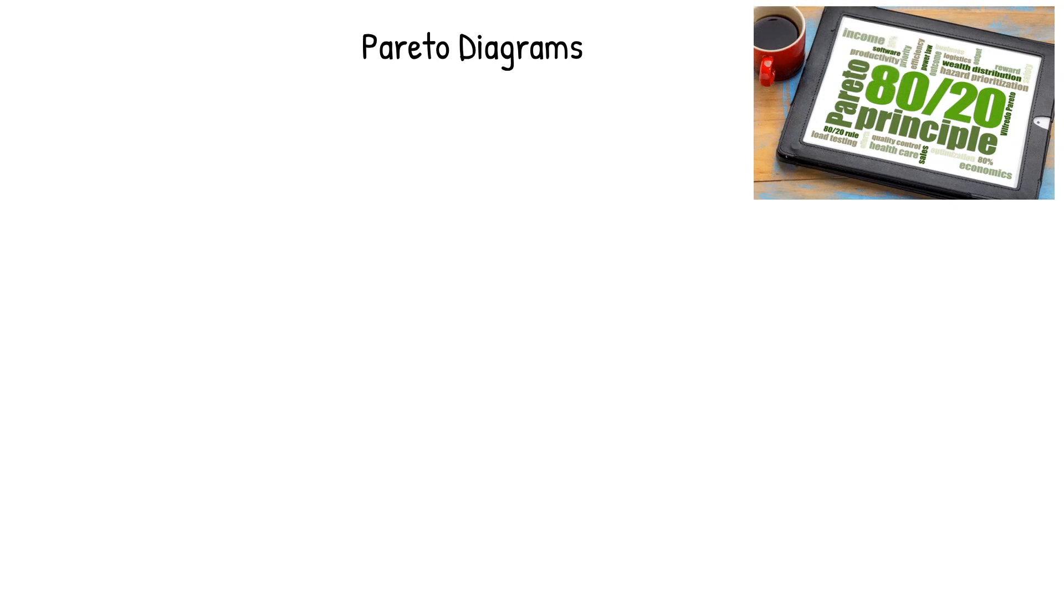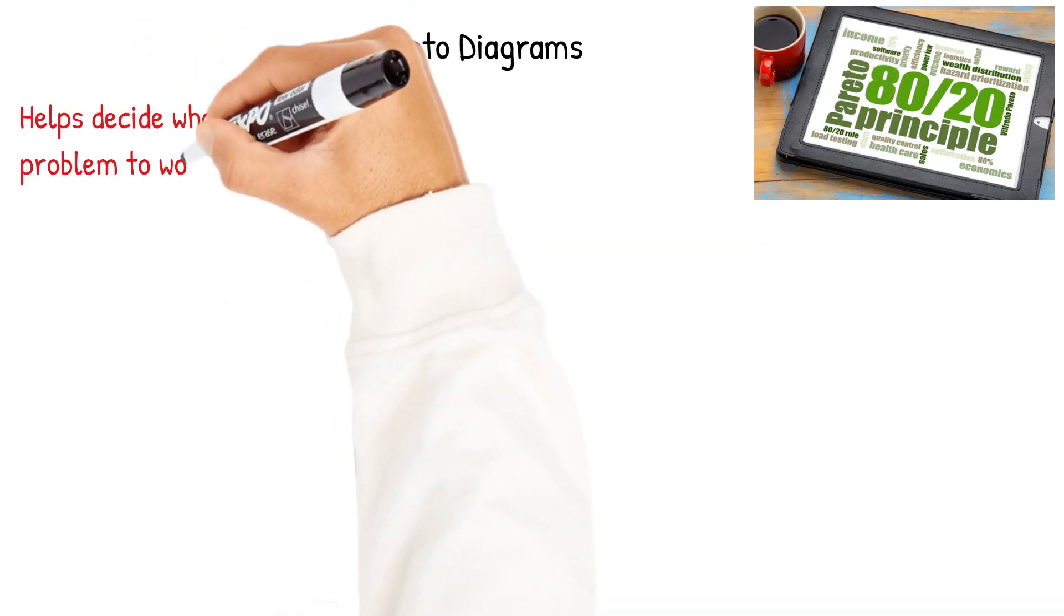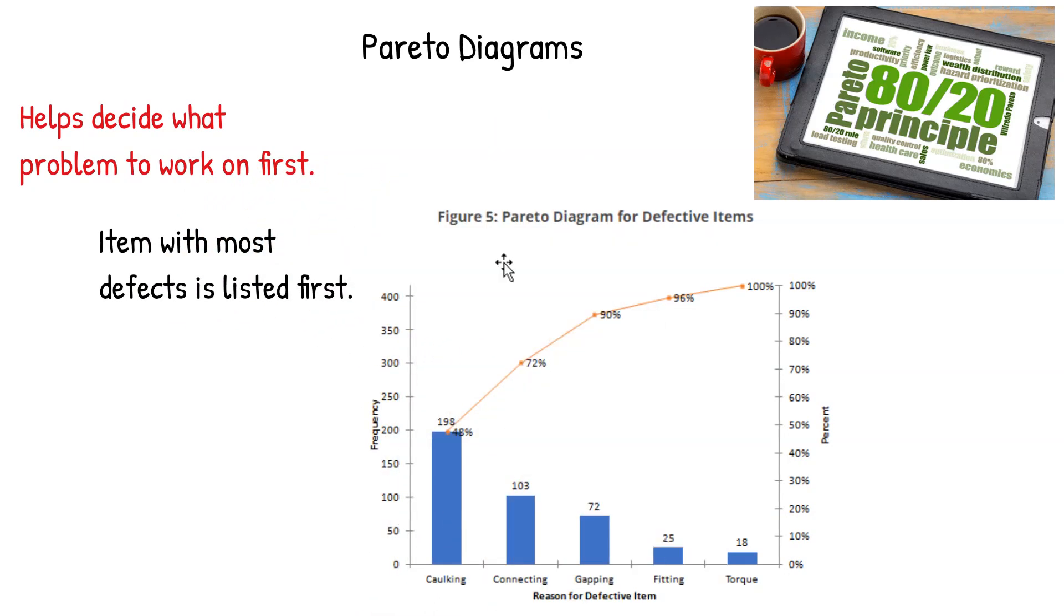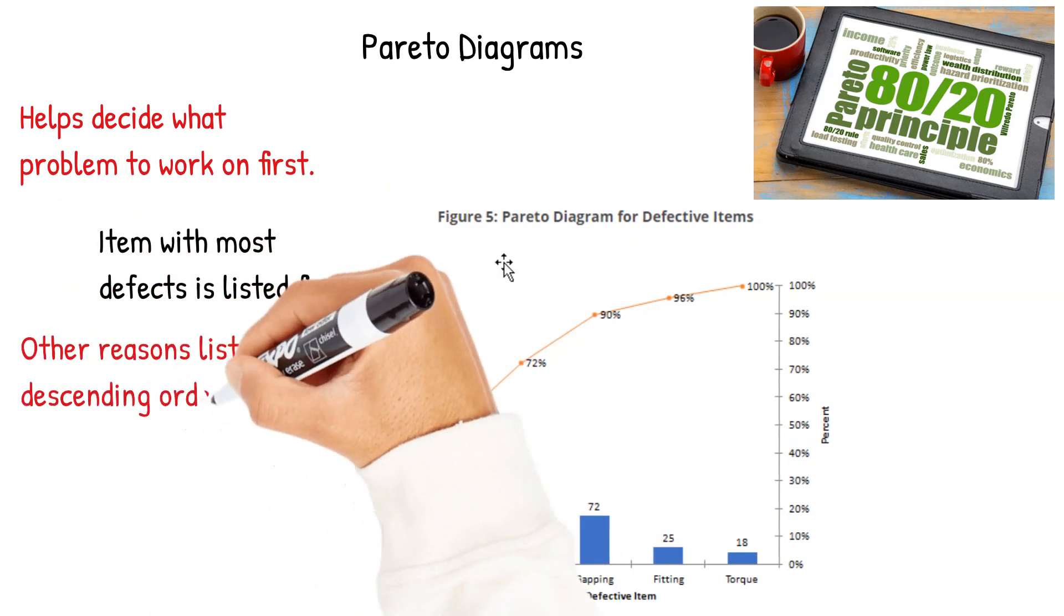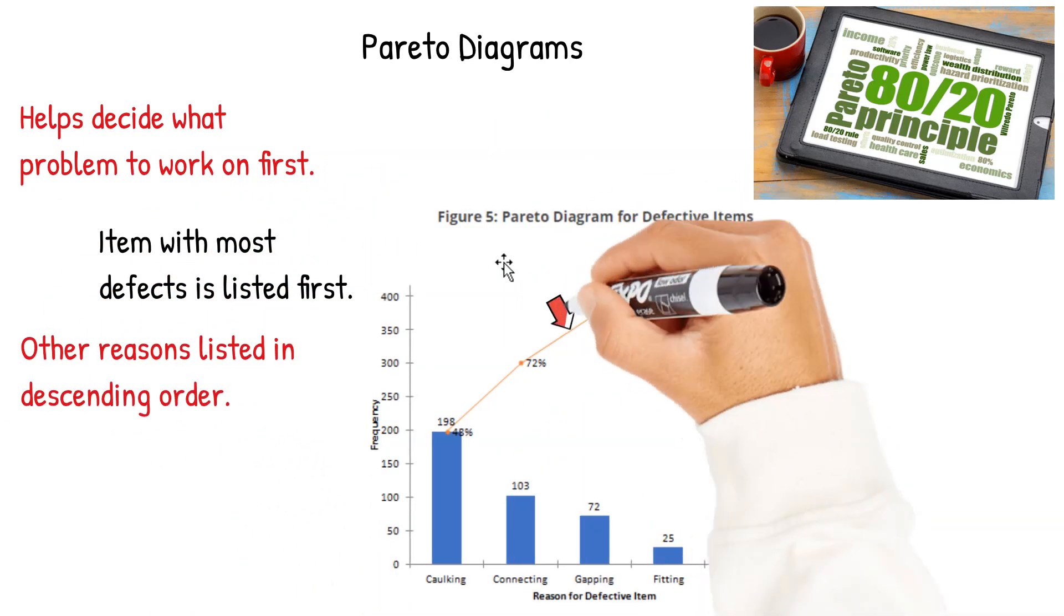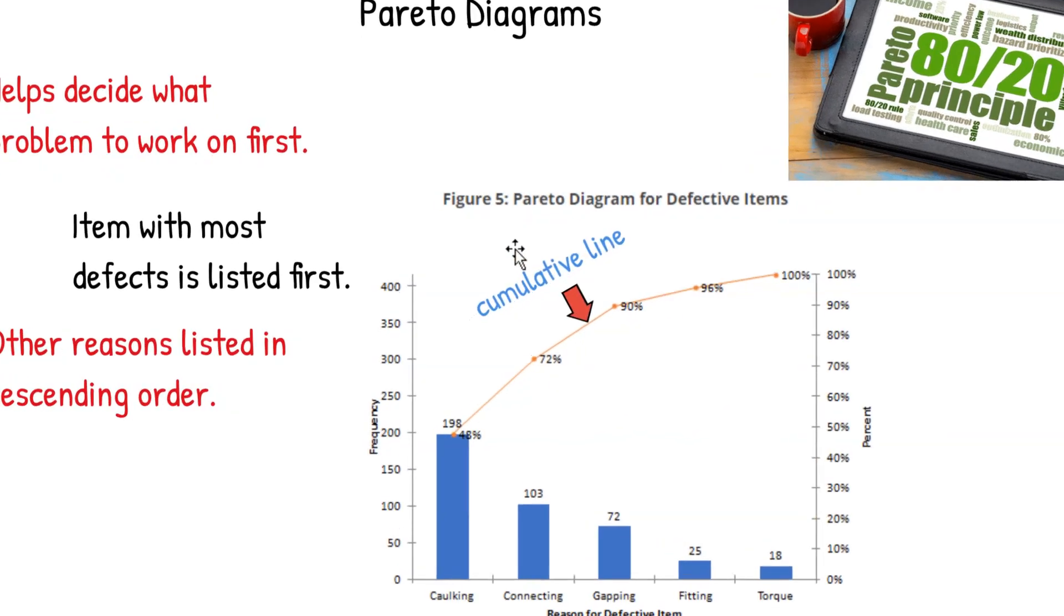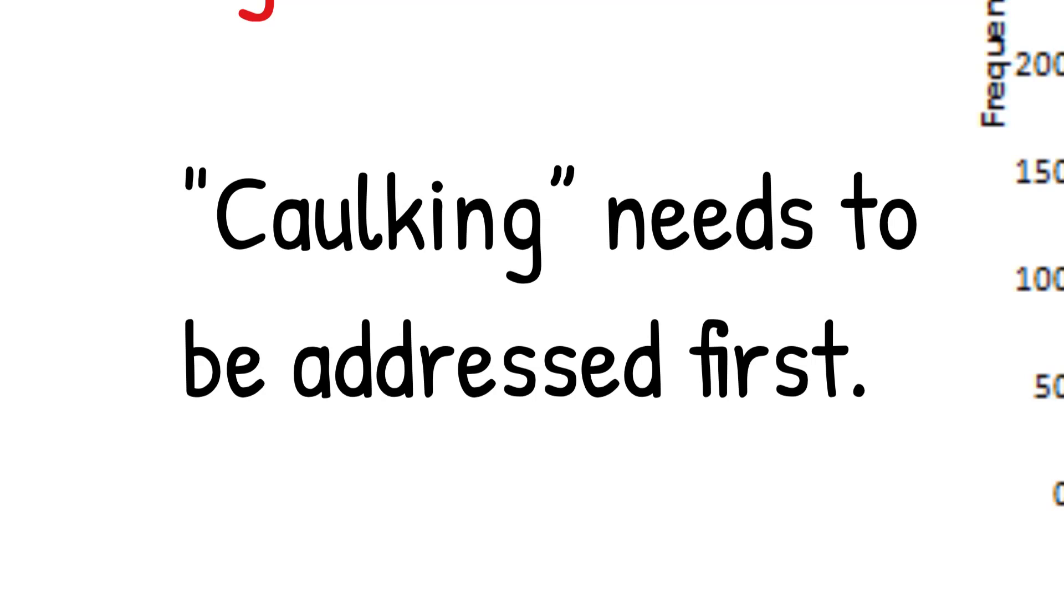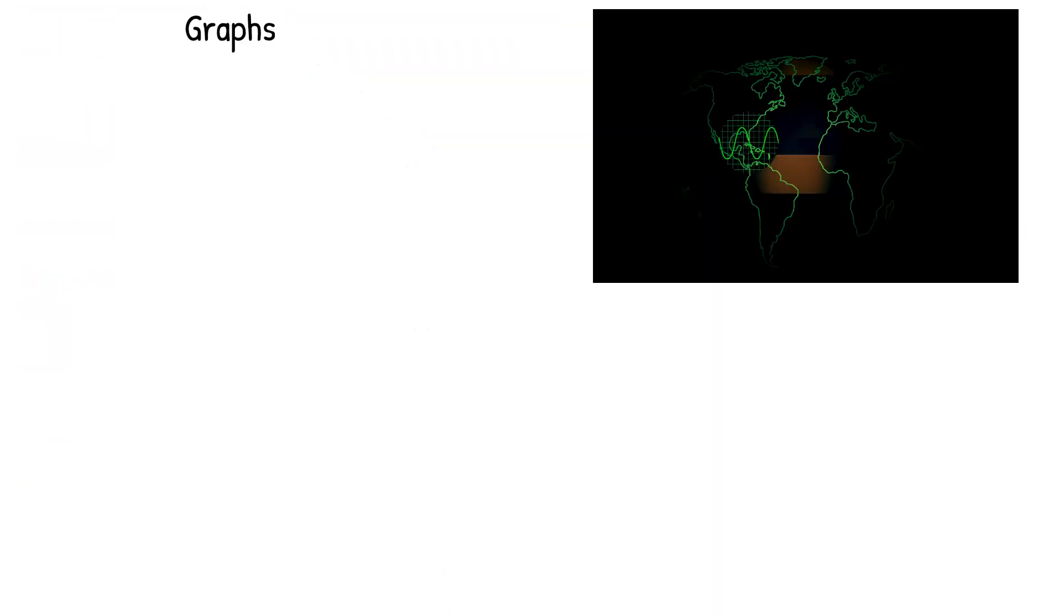A Pareto diagram can be used. It's based on the 80-20 principle. It helps us decide what to work on first. The item with the most defects is listed first. As you can see caulking is the one down here, and they're listed in descending order. So since caulking is the biggest it needs to be addressed first.